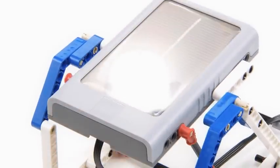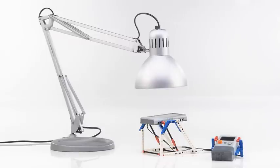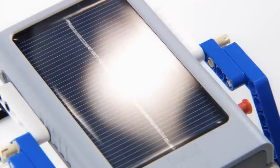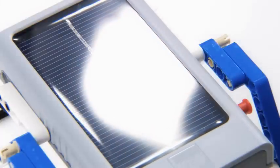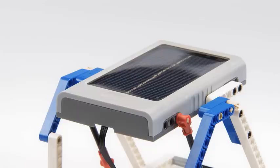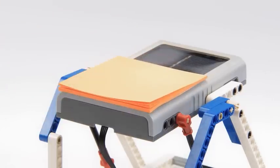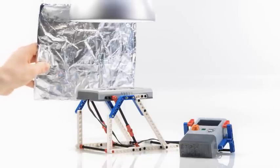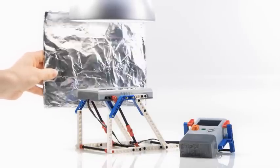If you wish to continue investigating the solar station's ability to generate power, we suggest that you change certain variables. For example, vary the effect of the light source, vary the distance to the light source, cover part of the solar panel, or enhance the amount of light reflected onto the solar panel.